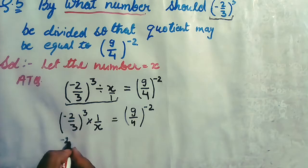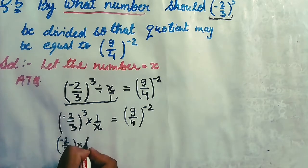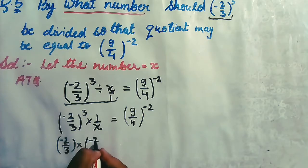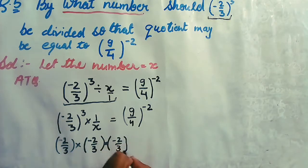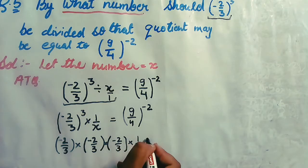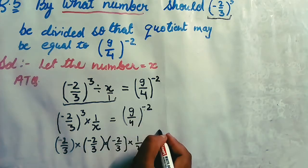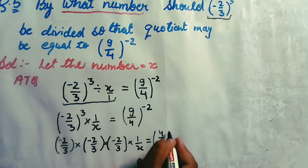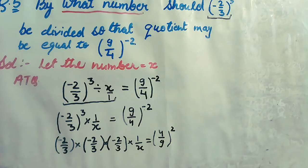Simplify further: (-2/3)³ means multiply (-2/3) three times: (-2/3) × (-2/3) × (-2/3), multiplied by 1/x. On the right-hand side, the power is negative; to make it positive, take the reciprocal of the base, so (9/4)⁻² becomes (4/9)² — we have taken the reciprocal of the base only.